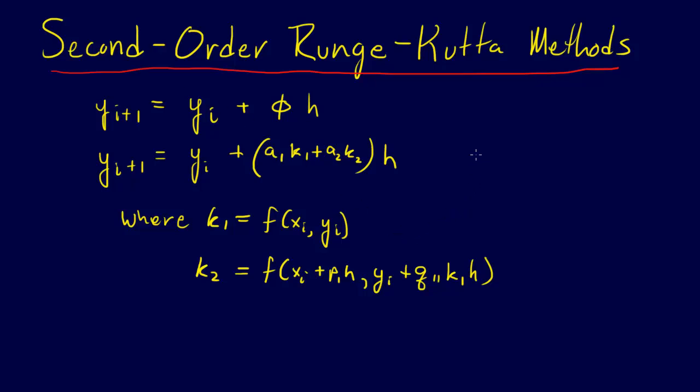Alright, for the second-order Runge-Kutta methods, we're going to give the general framework first and then show you how each one of the three methods—we're going to cover three methods: the Heun's method, the Ralston method, and the midpoint method.